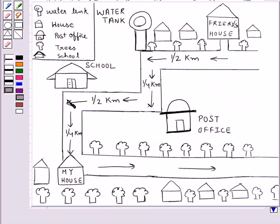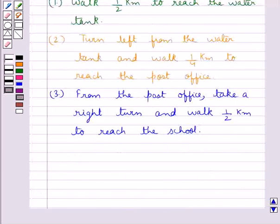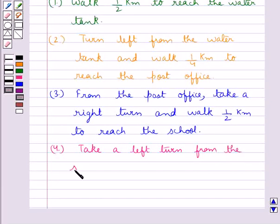After reaching the school, she should take a left turn and walk half a kilometer, and then she will reach my house. So our next step is: take a left turn from the school and walk half a kilometer to reach my house.